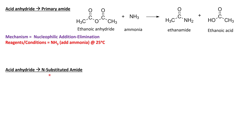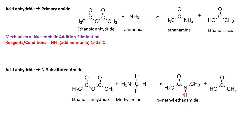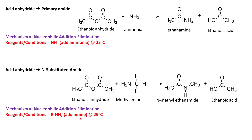Now let's look at how we can convert an acid anhydride into an N-substituted amide. What would we need to react an anhydride with in order to create an N-substituted amide? We react our ethanoic anhydride with methylamine to produce this structure. On the nitrogen there is a methyl group, and the carbon-containing side of the molecule is two carbons long, so it becomes N-methyl ethanamide — 'N-methyl' for the group on nitrogen, and 'ethanamide' because of the C=O and N. Our byproduct will again be ethanoic acid. The mechanism is nucleophilic addition elimination — just add an amine, and the reaction occurs at room temperature.